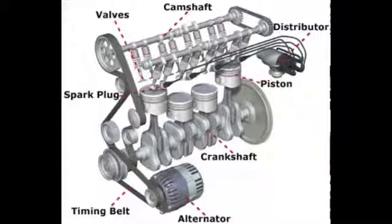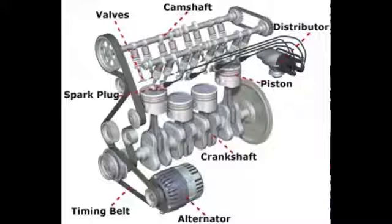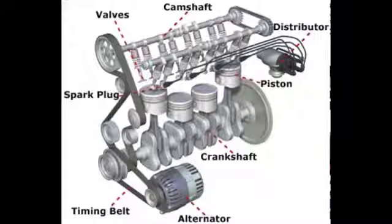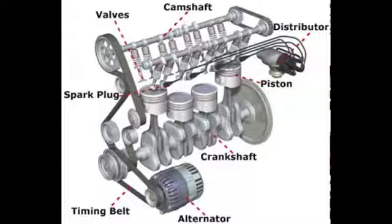Next, to the right, you can see the camshaft. The camshaft has little oblong-shaped circles on it that are called lobes. And as the shaft turns, the lobes push open the valves to let the gas in and the exhaust fumes out. The cam turns because it is attached to the crankshaft below by the timing belt, but we'll talk about that more later.